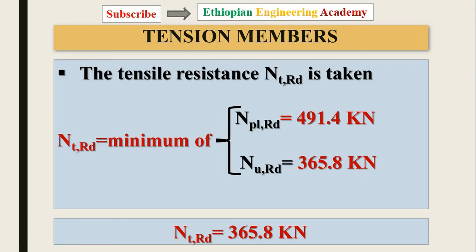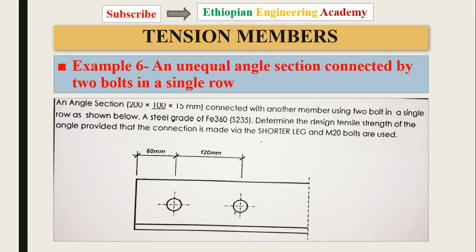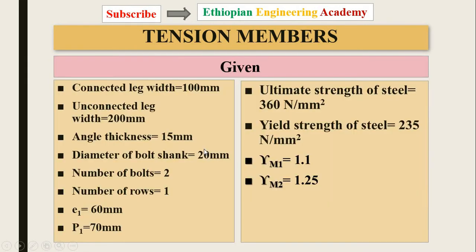The second part of this lecture is Example 6: an unequal angle section connected by two bolts in a single row. The previous example used an equal angle section, so follow attentively as this may differ. The angle section is 200 by 150 millimeters, connected with another member using two bolts in a single row. Determine the tensile strength given the connection is made by the shorter leg, with bolt diameter 20 millimeters. The figure shows dimensions of 60 mm spacing and p1 spacing.